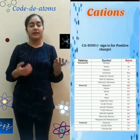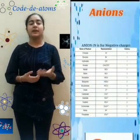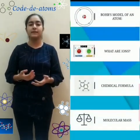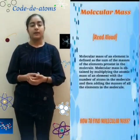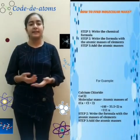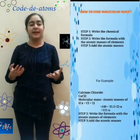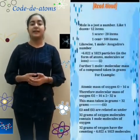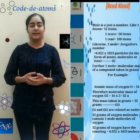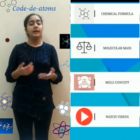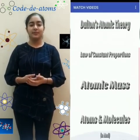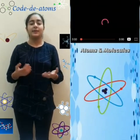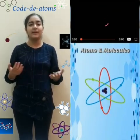The next topic, 'What are ions,' tells us about cations, anions, and polyatomic anions which are also known as radicals. Proper steps for finding the molecular mass of any compound are given. In both concepts, the idea of finding the number of atoms is given. In this app, some YouTube links are also provided to get better clarification and to understand the concepts in a better way.